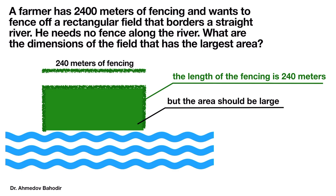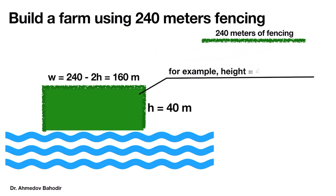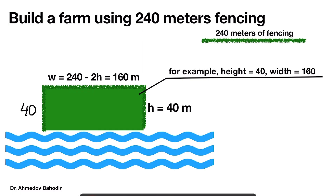We can choose the height and the width of this rectangular field differently. For example, if we choose the height to be equal to 40, then the width has to be equal to 160, so that the sum of all three sides equals 240, since the length of fencing is limited. So 40 plus 160 plus 40 equals 240 meters, and the area equals height times width, which is 40 times 160, equal to 6400 square meters.